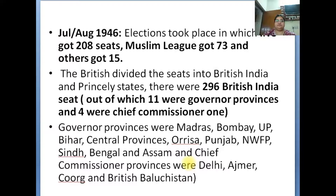In July-August 1946, elections were held in which the Indian National Congress got 208 seats, the Muslim League got 73 seats, and others got 15 seats.